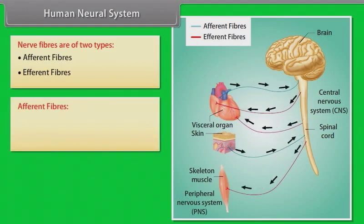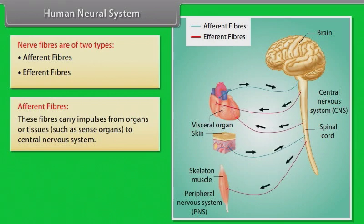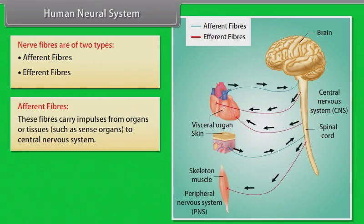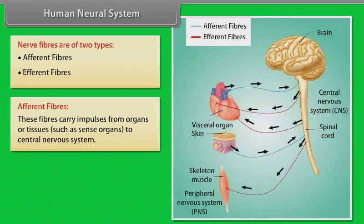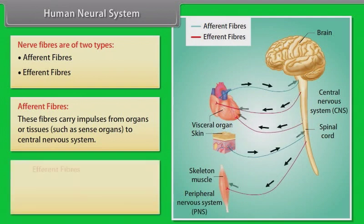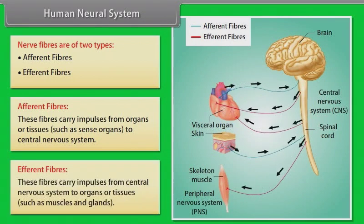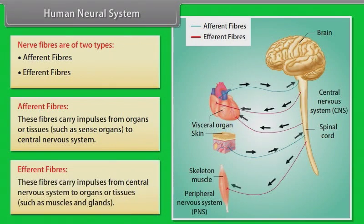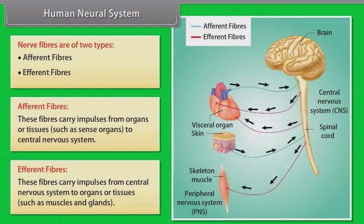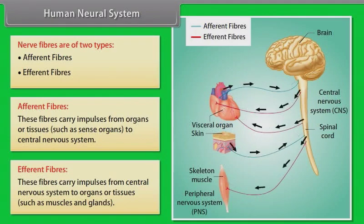Afferent fibers carry impulses from organs or tissues, such as sense organs, to the central nervous system. Efferent fibers carry impulses from the central nervous system to organs or tissues, such as muscles and glands.